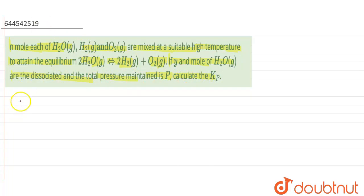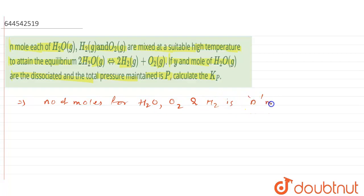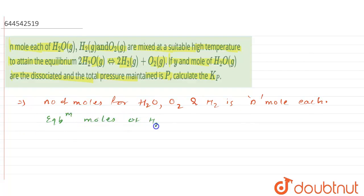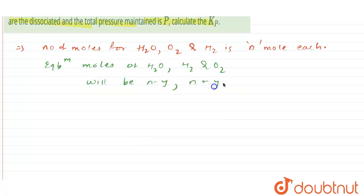To begin, we write down the given data: the number of moles for H₂O, O₂, and H₂ is n moles each. Moving forward, at equilibrium the moles of H₂O, H₂, and O₂ will be n minus y, n plus y, and n plus 0.5y respectively.